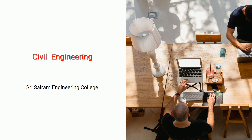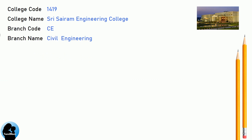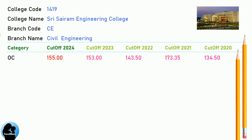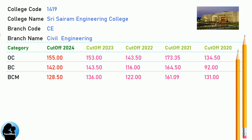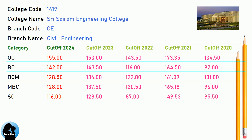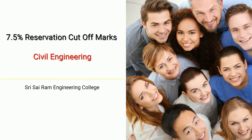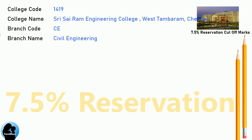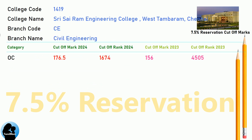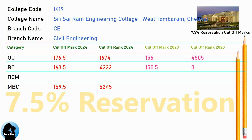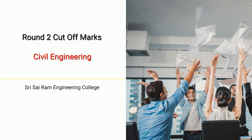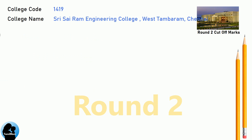DNA Cut-off for Shri Sai Ram Engineering College in Civil Engineering. DNA 7.5 Reservation Cut-off for Shri Sai Ram Engineering College in Civil Engineering. DNA Round 2 Cut-off for Shri Sai Ram Engineering College in Civil Engineering.